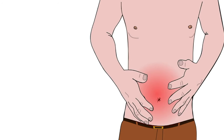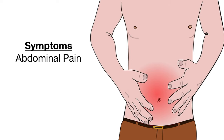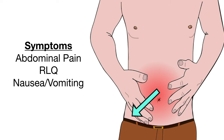Now let's talk about some of the symptoms. Typically there's going to be abdominal pain. The abdominal pain may initially be generalized or peri-umbilical — pain around the belly button. Over time, this pain can migrate and localize to the right lower quadrant, which is the location of the appendix. The reason for this is the pain starts off visceral, then becomes parietal pain, especially as the appendix gets more inflamed. There may also be associated nausea and vomiting, and there may be a fever present.